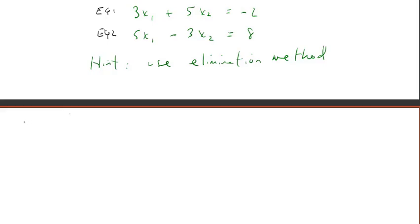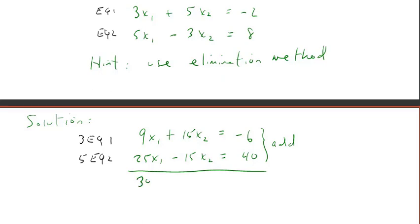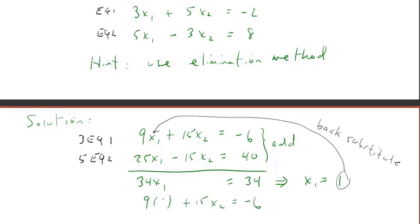We're going to call this equation 1 and equation 2 in the solution. Using the elimination method, 3 times equation 1 gives us one equation and 5 times equation 2 gives us another. When we add these together, the left side gives us 34x1 and the right side gives us 34, so we can solve for x1: x1 equals 1. Back-substituting into the first equation, we can solve for x2. The solution of this system is the vector (1, negative 1).